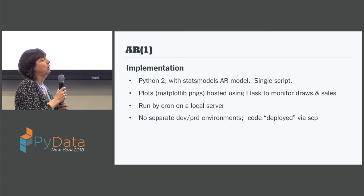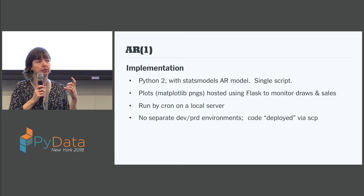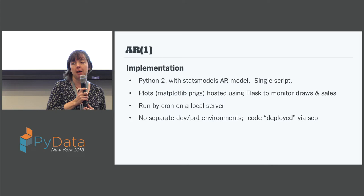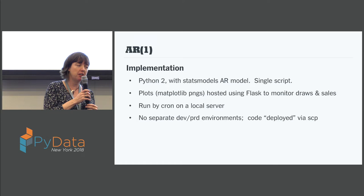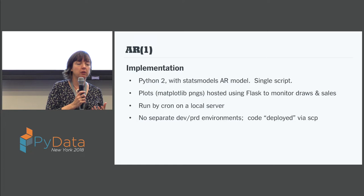In terms of implementation, this was all written in Python. The AR model is in stats models, and it was all written in a single script. We also had on a local server a Flask app hosting matplotlib PNGs that monitored the draws and the sales just to make sure everything was going smoothly over time. The weekly process was run by a cron job on that server. This worked, but it wasn't the greatest data engineering setup — we didn't have any separate dev or prod environments, and deploying the code involved just SCP-ing it from your laptop up to the server. So it ended up being rather fragile, and we wanted to improve the data engineering as well as the algorithms.